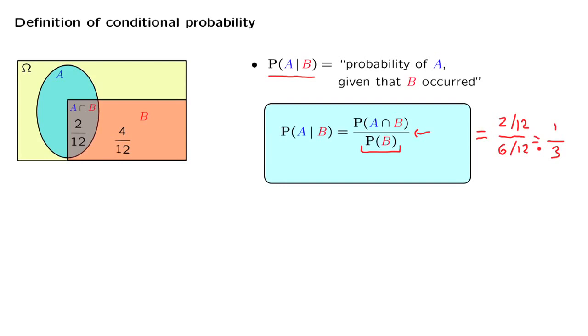At this point, let me also make a comment that this definition of conditional probabilities makes sense only if we do not attempt to divide by 0, that is, only if the event B, on which we are conditioning, has positive probability. If B, if an event B has 0 probability, then conditional probabilities given B will be left undefined.